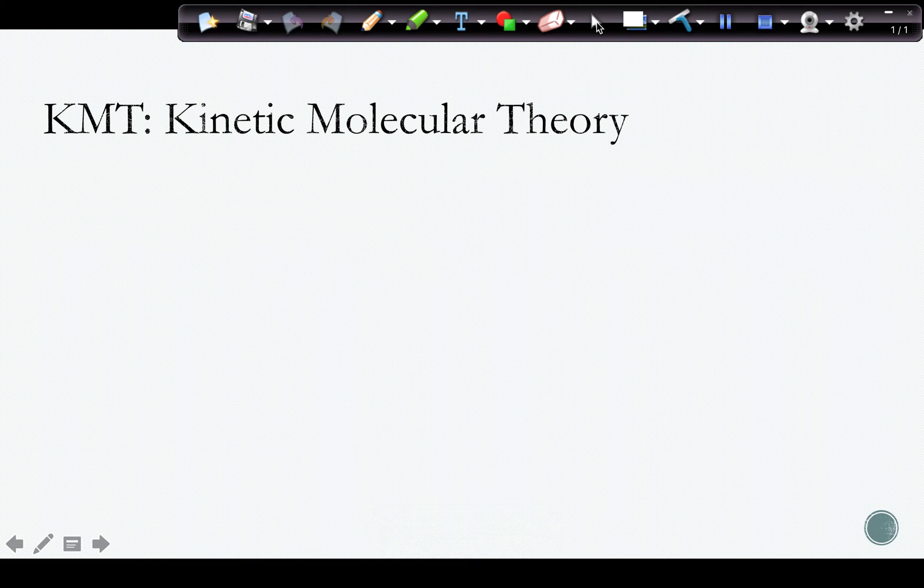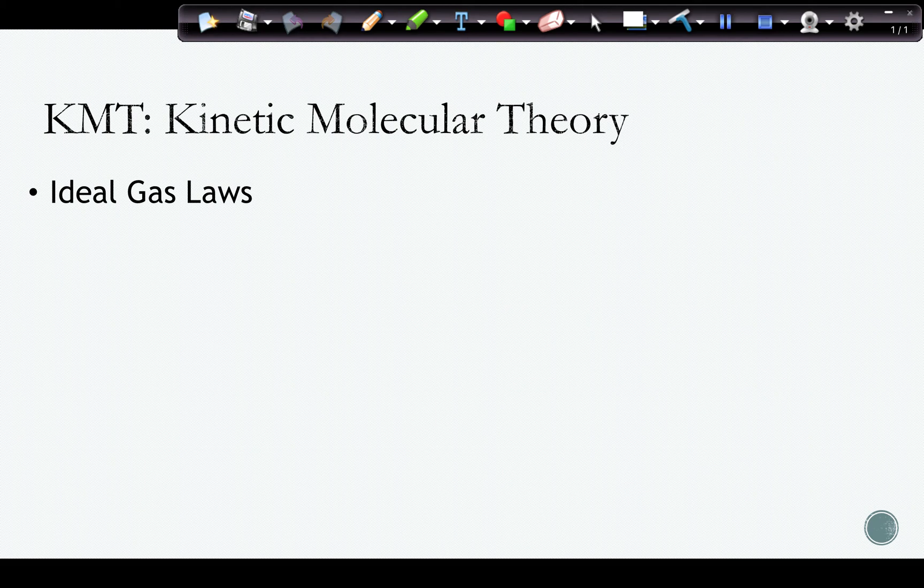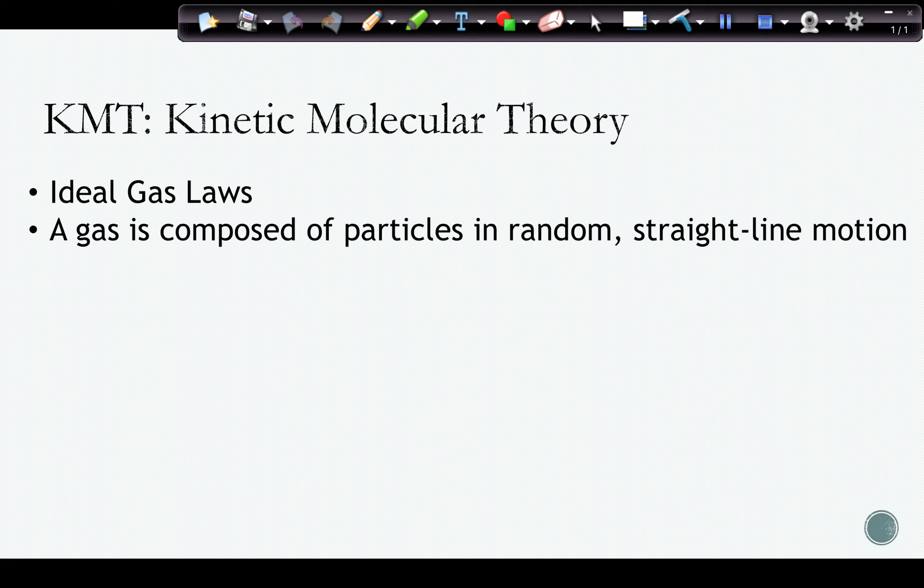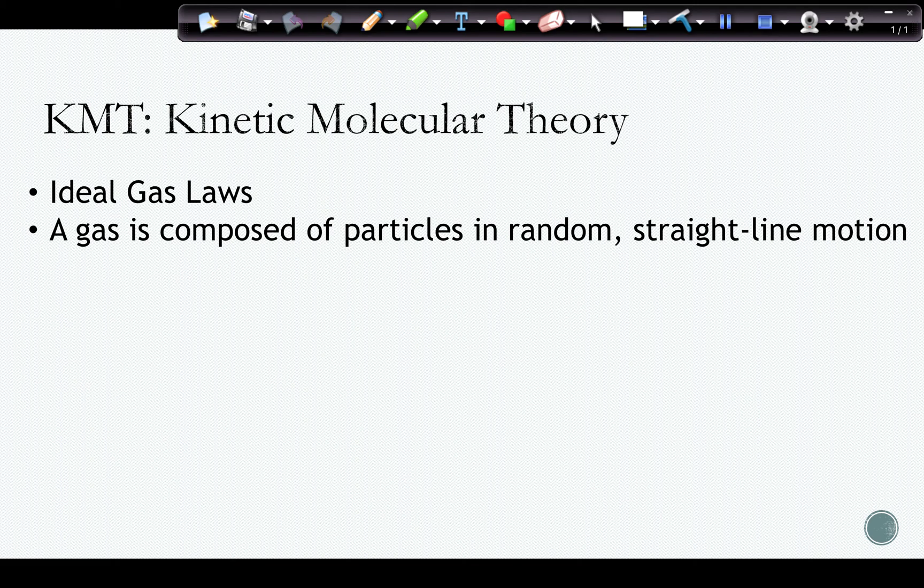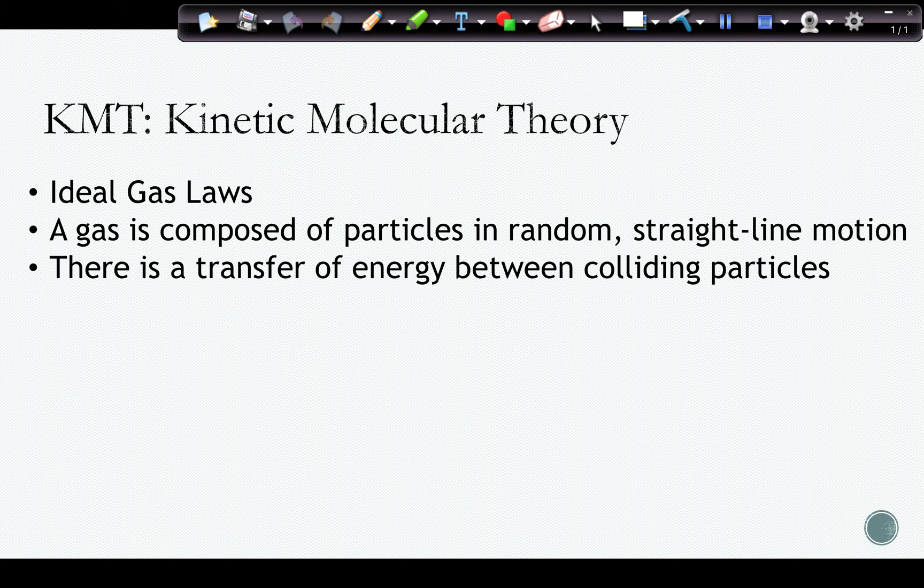When we talk about the kinetic molecular theory, this is also sometimes known as the ideal gas law or the ideal gas laws. These are the pieces of information we go to when we're trying to look at how gases behave. Ideal gases would behave this way, but there is no such thing as a truly ideal gas. Hydrogen and helium, being the lightest gases and the smallest gases with the weakest intermolecular forces, would be the closest to ideal. The kinetic molecular theory states that a gas is composed of particles moving in random straight line motion. There is a transfer of energy between colliding particles. They move in straight lines until they hit something and then they bounce off of each other in different directions.